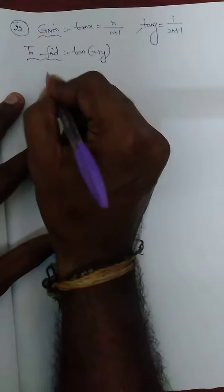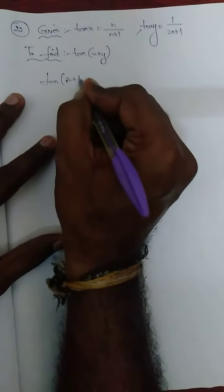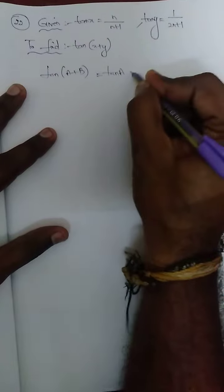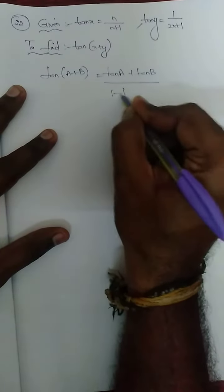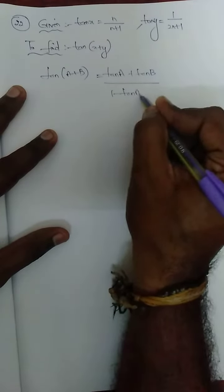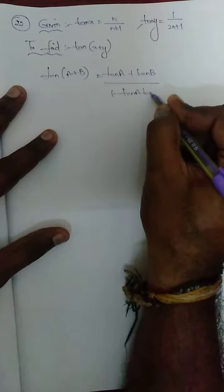We know the tan(a+b) formula: tan(a+b) = (tan(a) + tan(b)) / (1 - tan(a)·tan(b)). In place of a and b, we apply x and y.